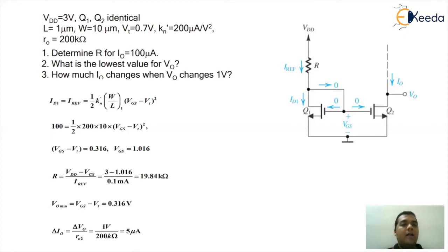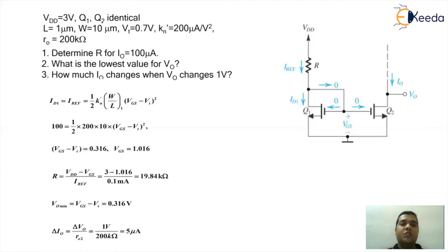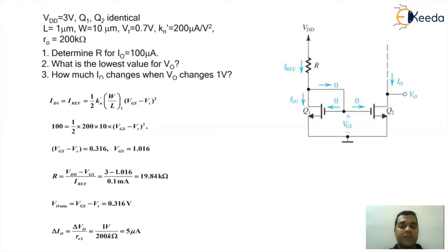For the last part — how much IO changes when VO changes by 1V: the output resistance RO is defined as ΔVO / ΔIO, so rearranging gives ΔIO = ΔVO / RO2. With ΔVO = 1V and RO2 = 200 kΩ, we get ΔIO = 5 µA. So whenever the voltage changes by 1V, the current changes by 5 µA.